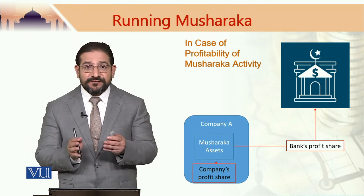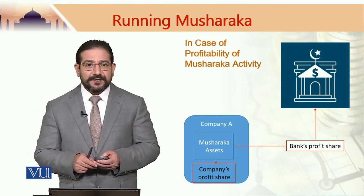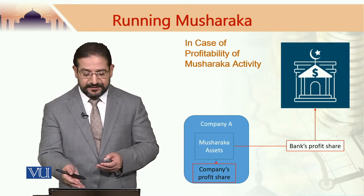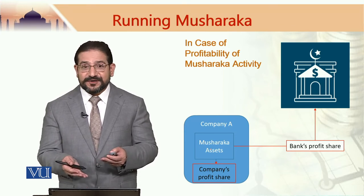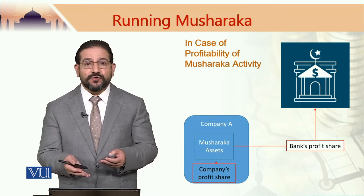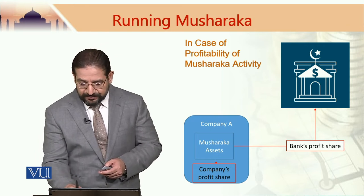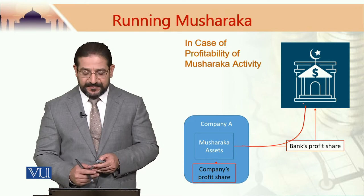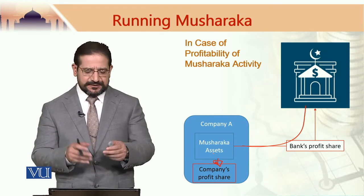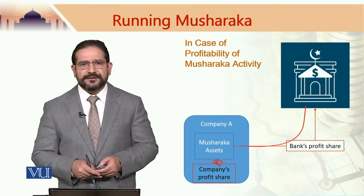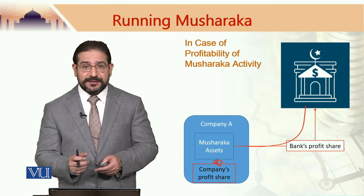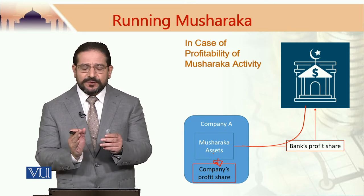In case of profitability of the Musharraka activity, the bank would have its own profit share and the company would also benefit from the profit of that Musharraka activity in accordance with its own profit share. Part of the profit would go to the bank and part would be retained by the company. This is the case when profit is generated by the Musharraka activity, which is a segment of the business within Company A.